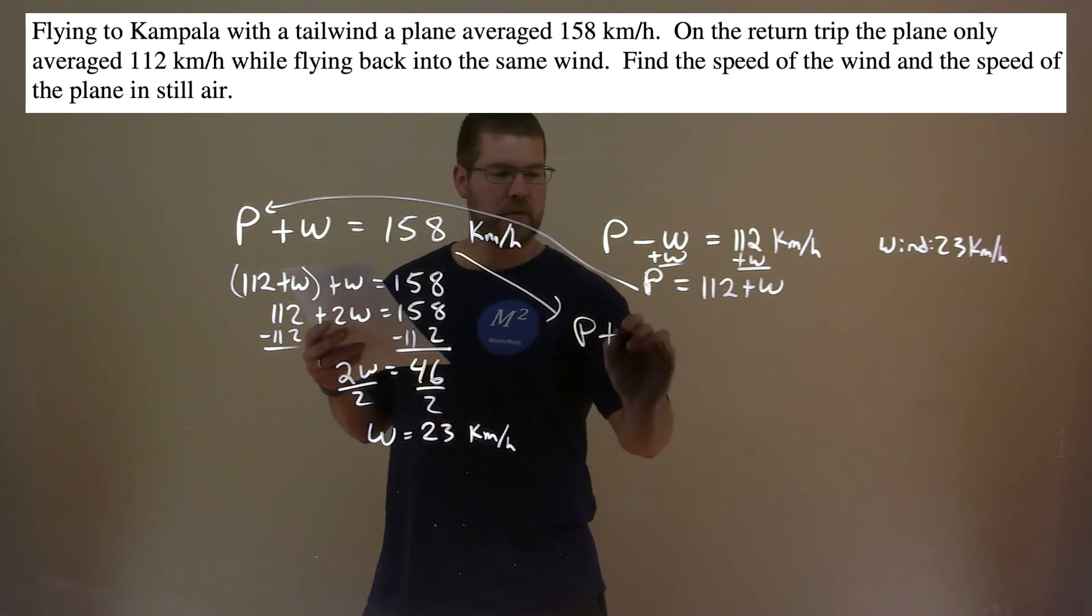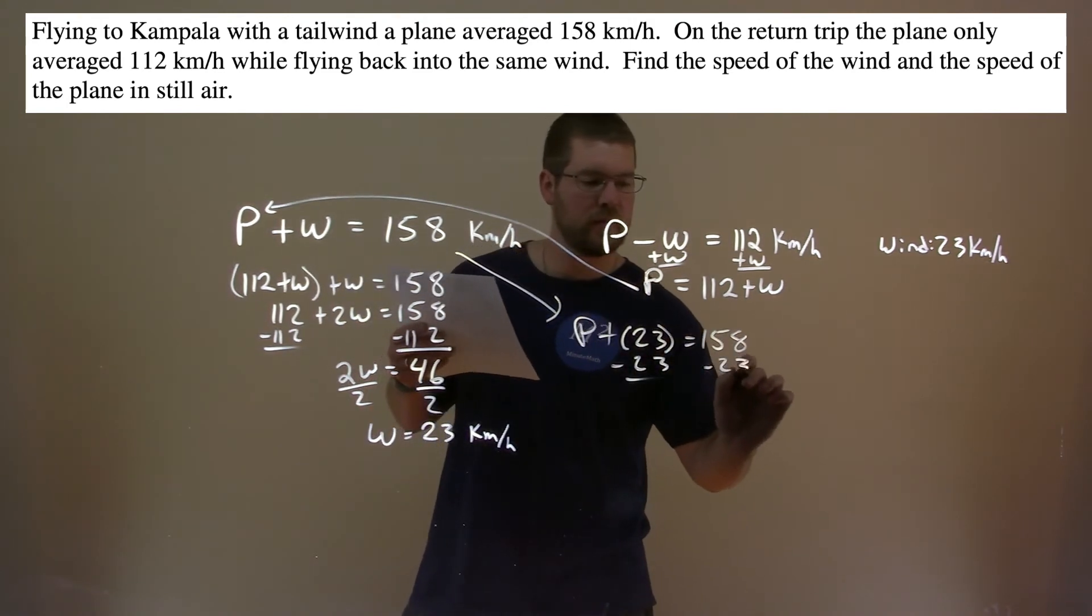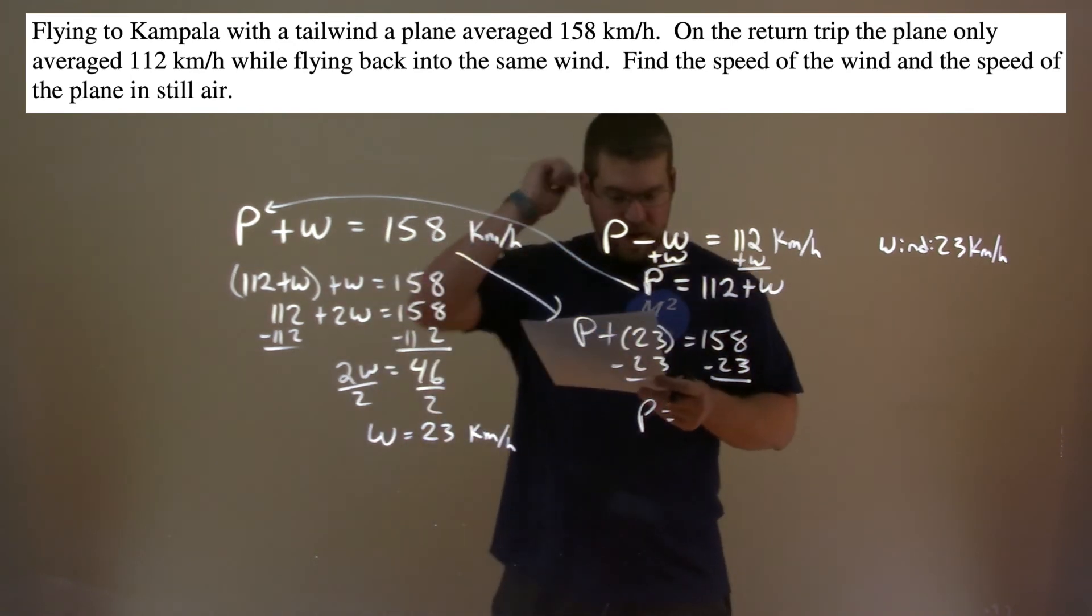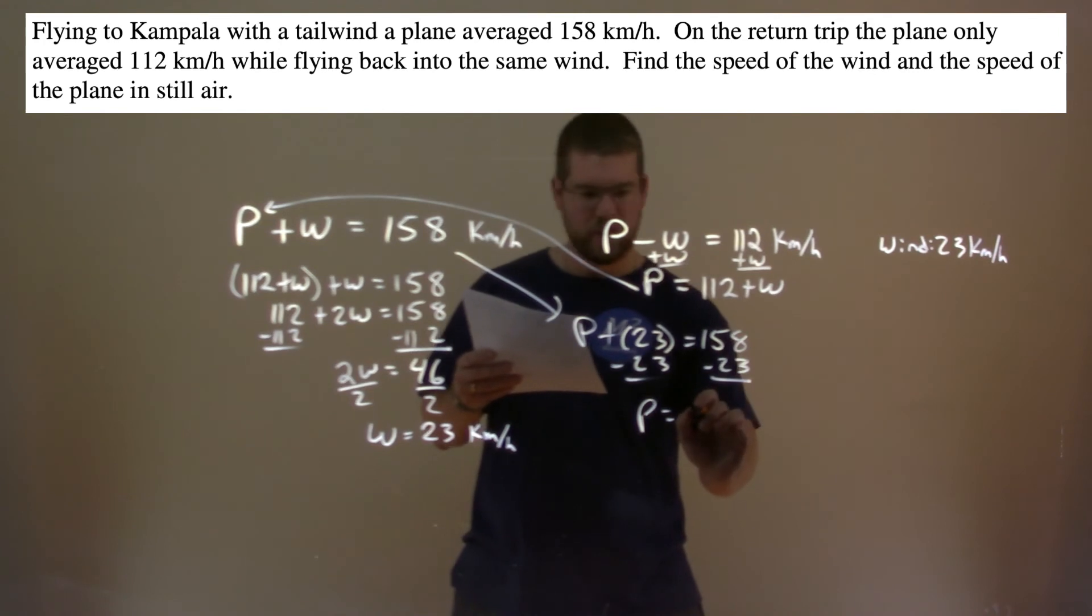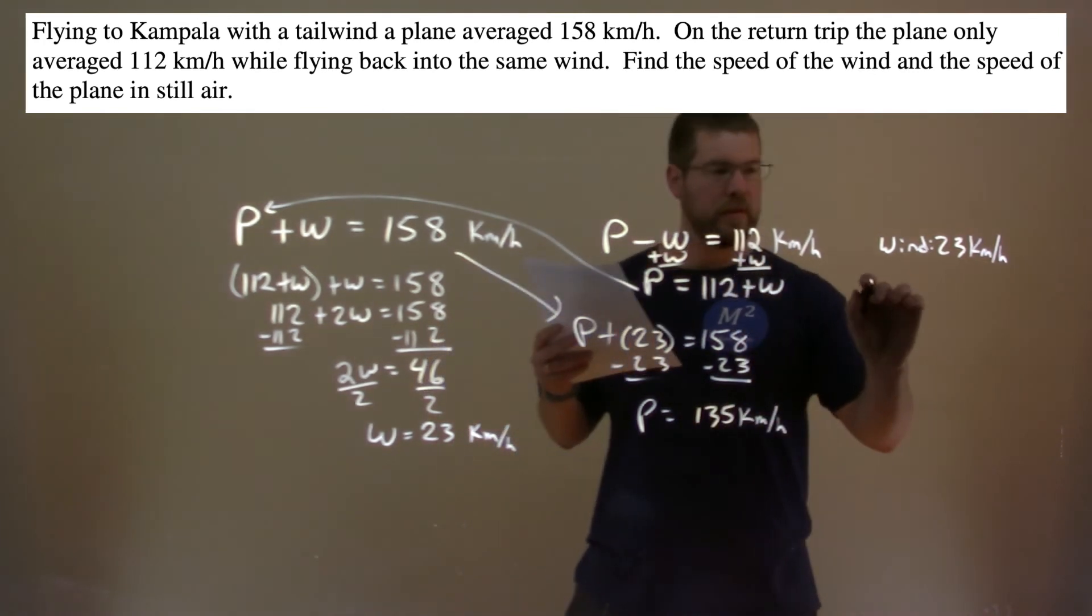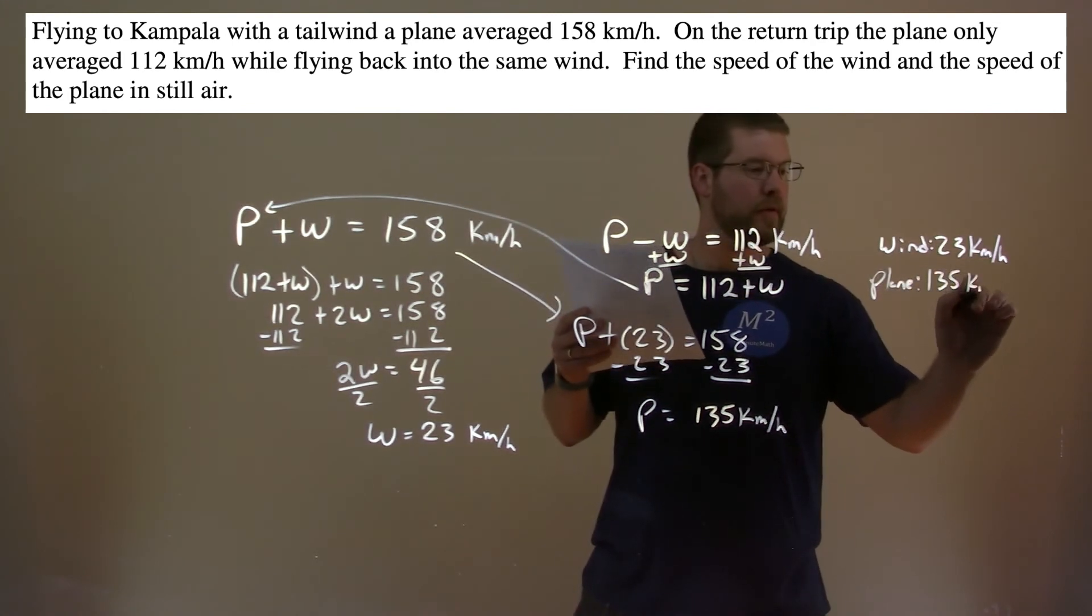P plus the speed of W, which is 23, equals 158. Subtract the 23 to both sides. Pretty simple here. And P is equal to 158 minus 23, which comes out to be 135. So the speed of the plane is 135 kilometers per hour.